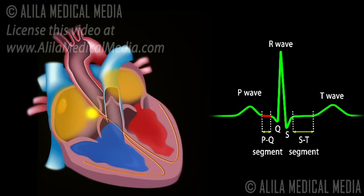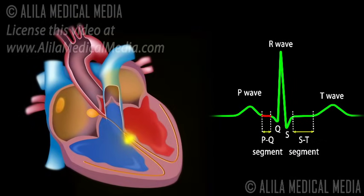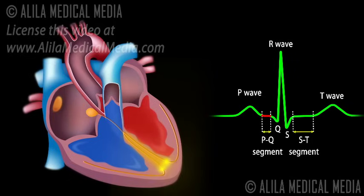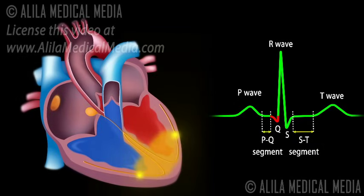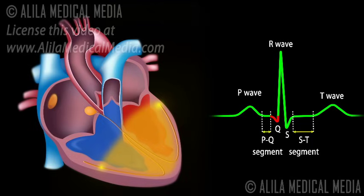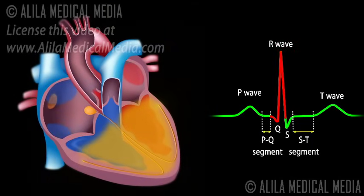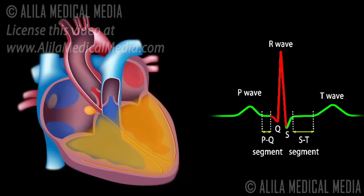The QRS complex marks the firing of the AV node and represents ventricular depolarization. The Q wave corresponds to depolarization of the interventricular septum. The R wave is produced by depolarization of the main mass of the ventricles. The S wave represents the last phase of ventricular depolarization at the base of the heart. Atrial repolarization also occurs during this time, but the signal is obscured by the large QRS complex.